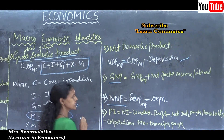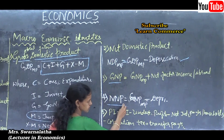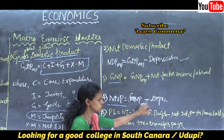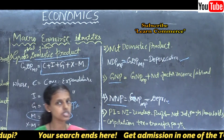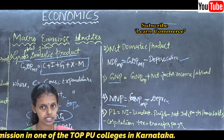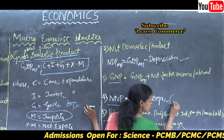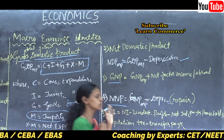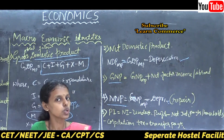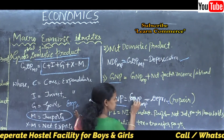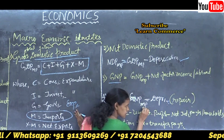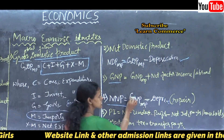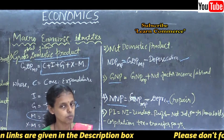Next is NNP — Net National Product. Net National Product equals GNP at market price minus depreciation charges. Depreciation charges means repair charges or charges on wear and tear. While calculating national income we exclude depreciation. So NNP equals GNP at market price minus depreciation charges — we consider only the gross national product at market price excluding depreciation.